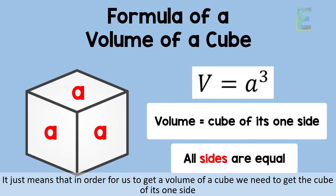It just means that in order for us to get a volume of a cube, we need to get the cube of its one side.